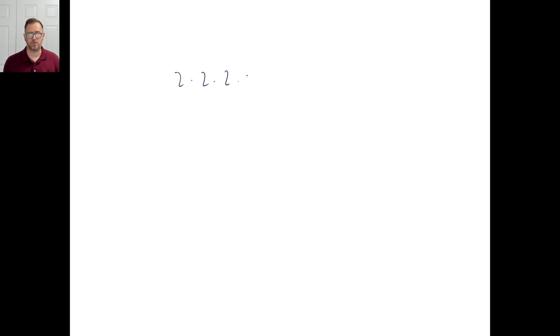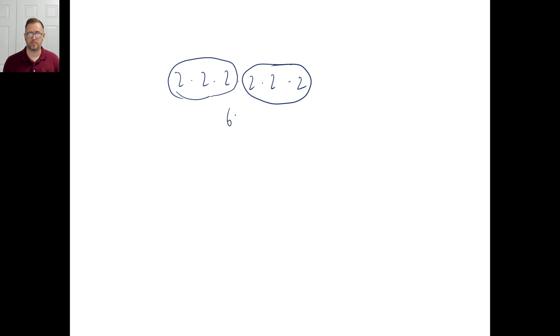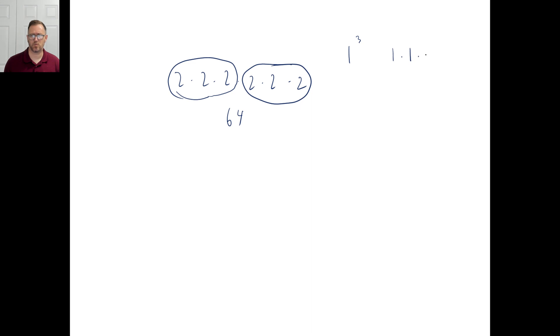Two to the sixth power means two times two times two times two times two times two. You can bunch these — two times two times two is eight, and eight times eight is 64. So two to the sixth power is 64. For one to the third power, that is one times one times one, which is one — it's not three.